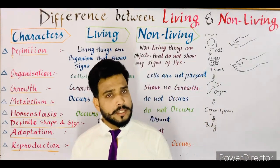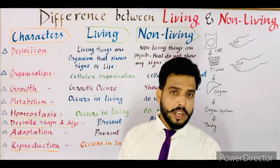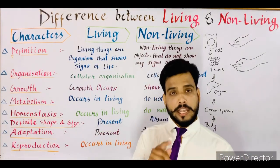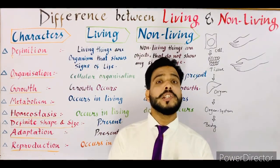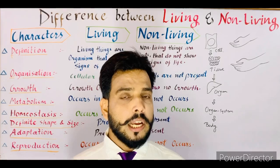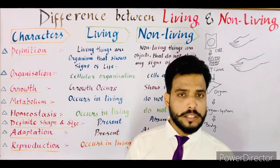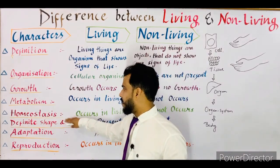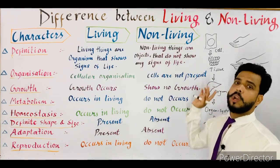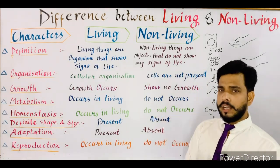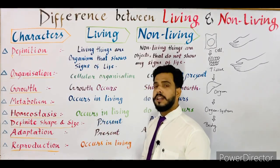The next point is homeostasis — a new word for you. Homeostasis means to maintain the internal body temperature. All living beings maintain their internal body temperature, and this phenomenon is known as homeostasis. Homeostasis occurs only in living organisms and does not occur in non-living things.